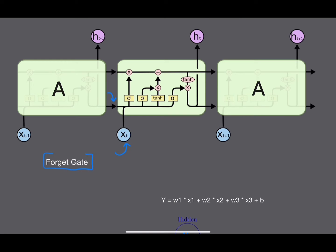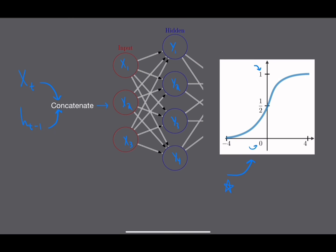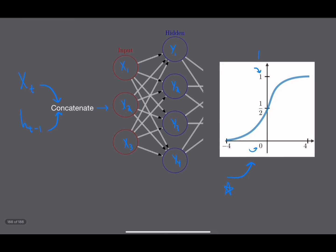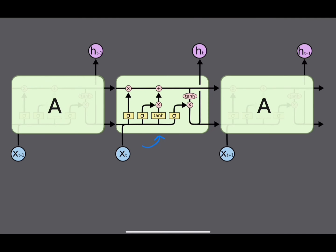This is referred to as the forget gate. Some information in a body of text is irrelevant for predicting the next word. In our example predicting 'French', there was irrelevant information in between, but we needed to remember 'France.' The forget gate multiplies the previous cell state by a number between zero and one — closer to zero means more forgetting, closer to one means more preserving. Through training, the LSTM learns the right parameters to forget and preserve the right information.